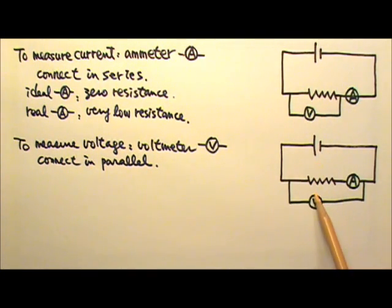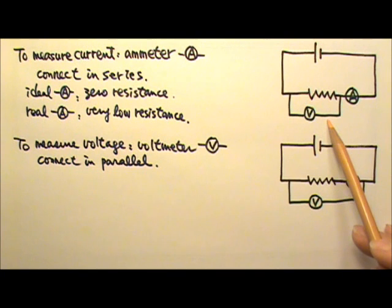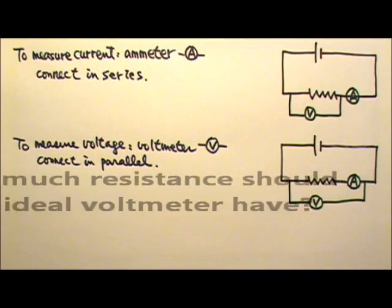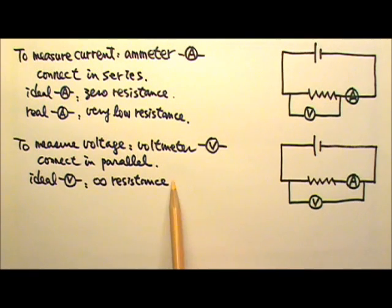An ideal voltmeter should not change anything in the original circuit either. How much resistance do you think an ideal voltmeter should have? It should have infinite resistance.